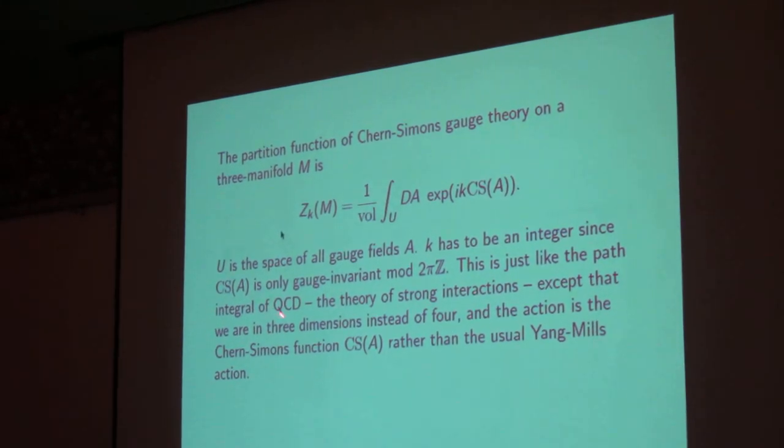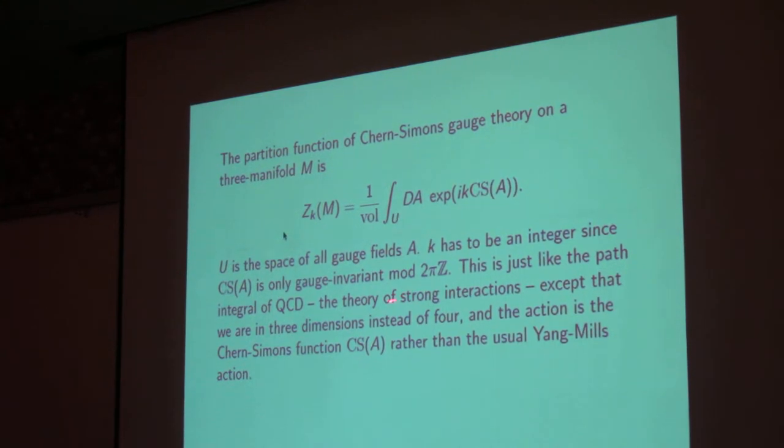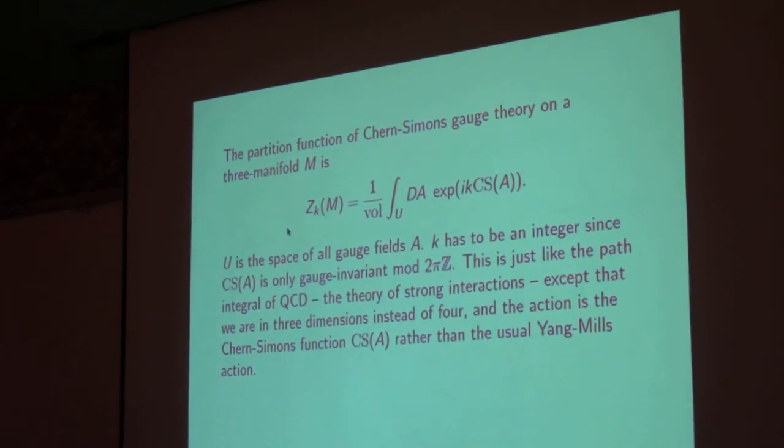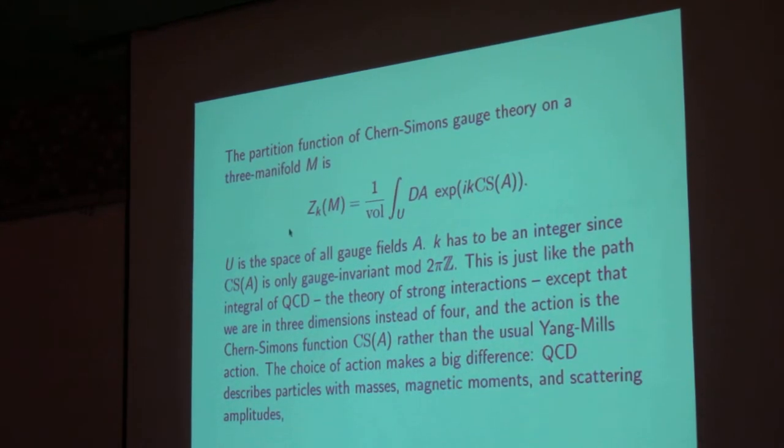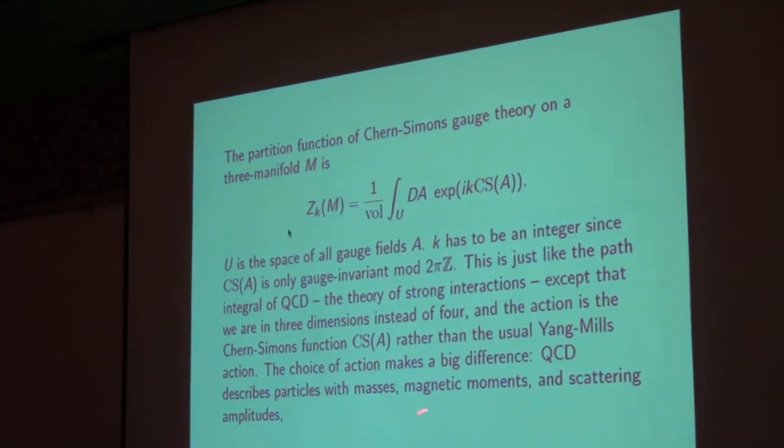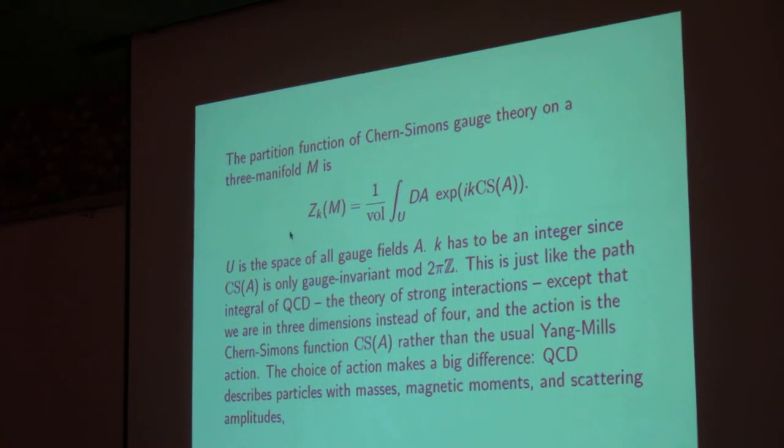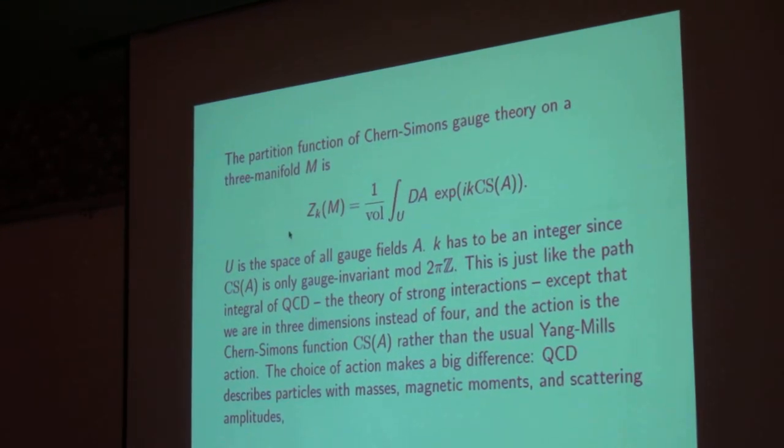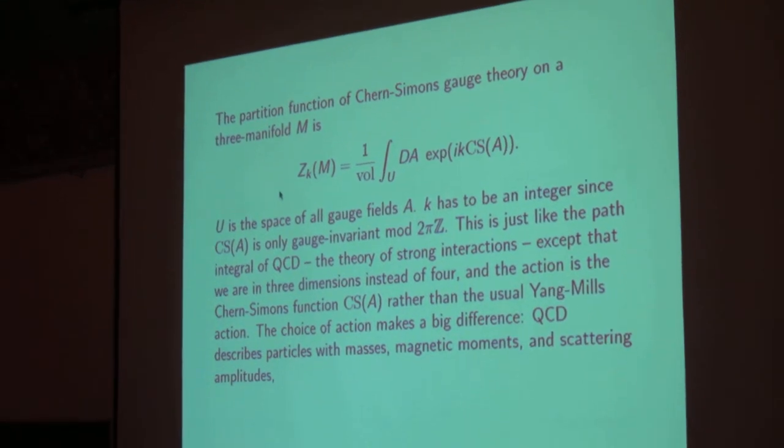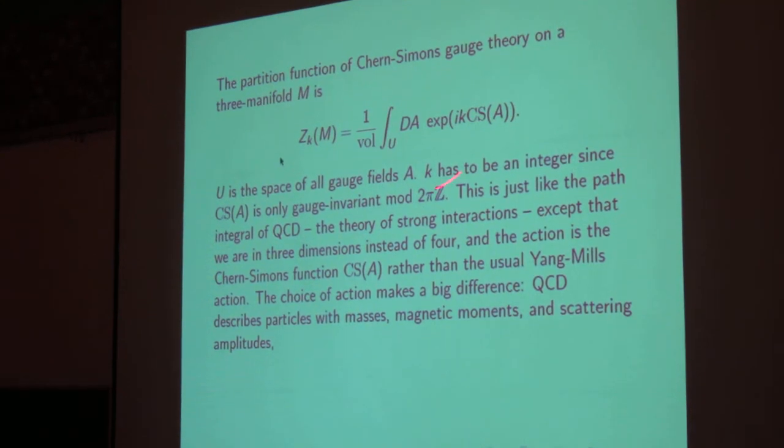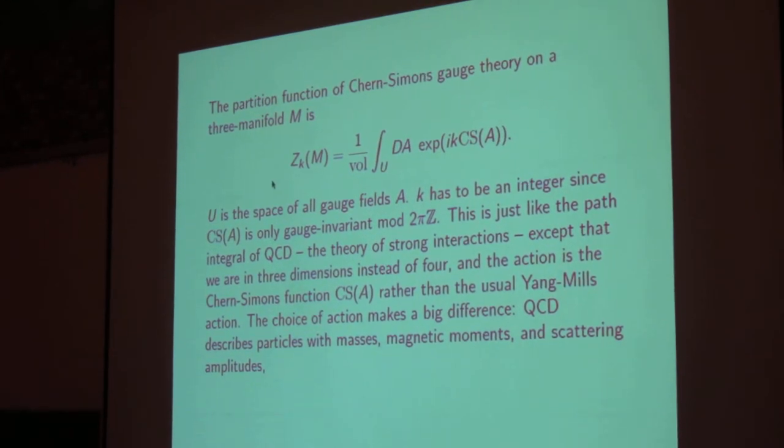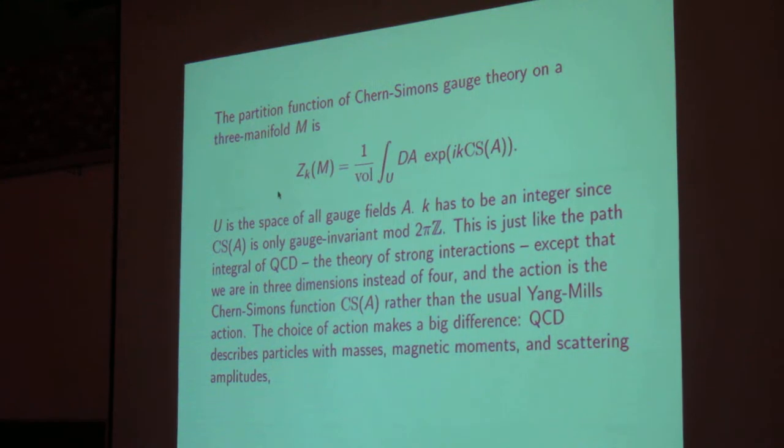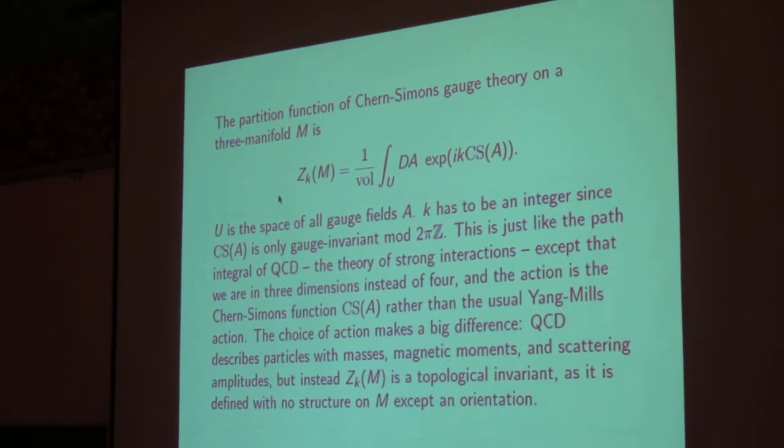So formally, this is a lot like the path integral of QCD, the theory of strong interactions, except that we're in three dimensions instead of four, and the action is the Chern-Simons function instead of the usual Yang-Mills action, and we've left out the quarks. Now the choice of action makes a big difference. QCD describes particles with masses, momenta, and all the rest. But all that only makes sense when you have a space-time metric, so that for instance the particles travel inside a light cone. Since this theory is defined without using a space-time metric, it can't possibly describe any kind of global propagation of signals. The signals wouldn't know how to propagate. All it can do is produce topological invariants. So it's sometimes called a topological quantum field theory.